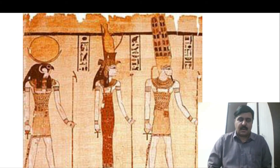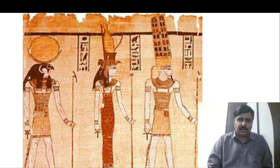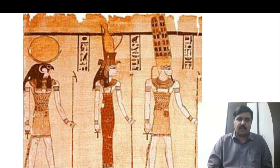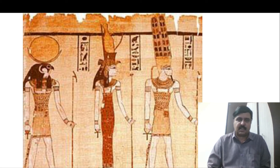Hello viewers, from today I am going to bring new technology to make videos. Now going to the topic — in Egyptian mythology there is a worshipping of the Theban Triad. Who are the Theban Triad? That means Amun, Mut, and Khonsu. These three gods are called the Theban Triad.